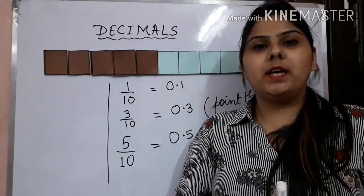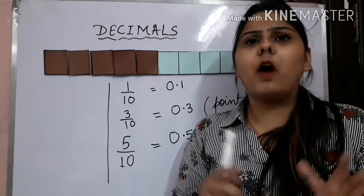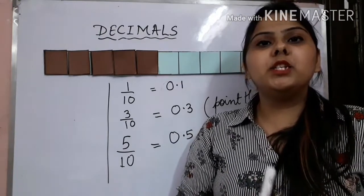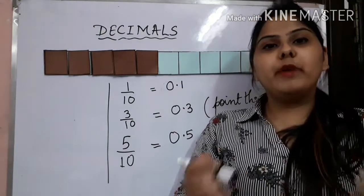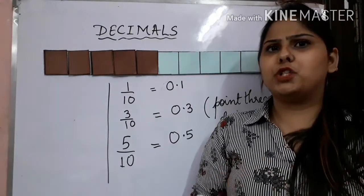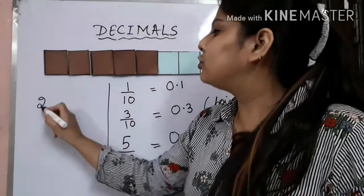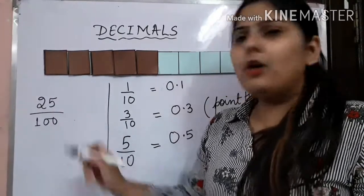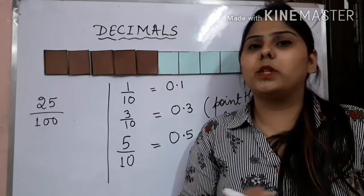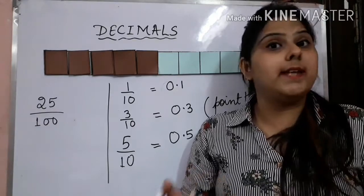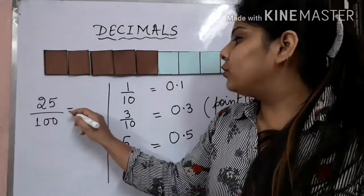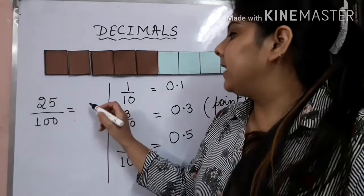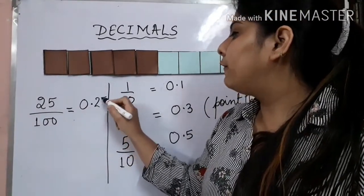In the next case, let us take a sheet and make a grid of 100 boxes. Out of those 100 boxes, let us shade 25 parts. In order to represent the fraction for the shaded portion, it comes out to be 25 upon 100. The number of zeros here are 2, so I will represent it as 0.25.